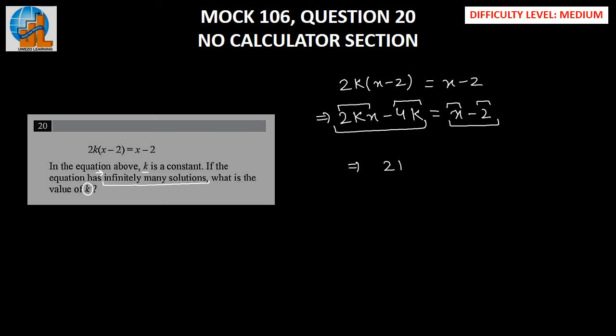So let us take 2kx = x. We can cancel out this x here, which implies our k should be equal to 1/2. Hence, 1/2 is the right answer.